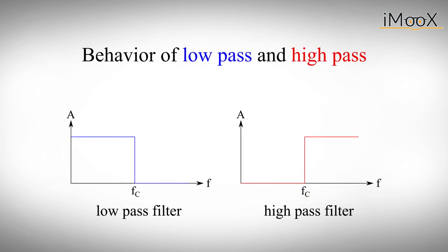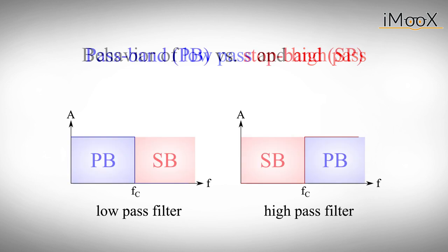The high pass filter will do just the opposite. It will remove all low frequency AC signals until the corner frequency FC is reached, while all signals with frequencies higher than FC will pass through unaffected. We call those areas where AC signals can pass through the pass band and those where AC signals are stopped the stop band.